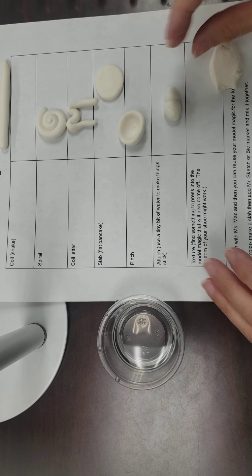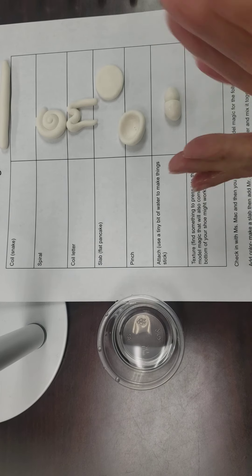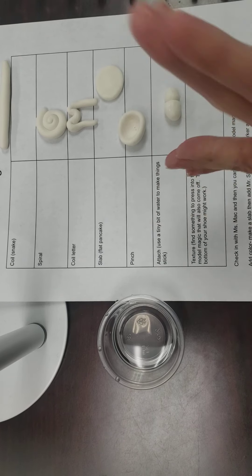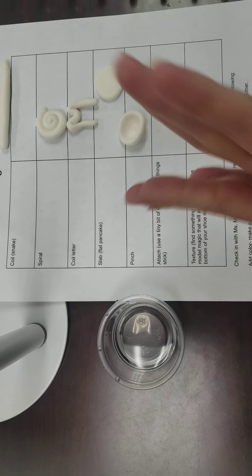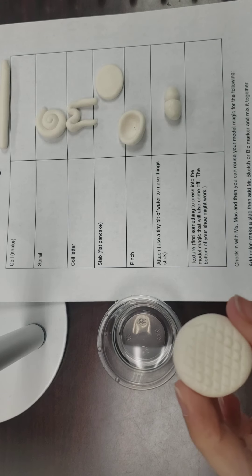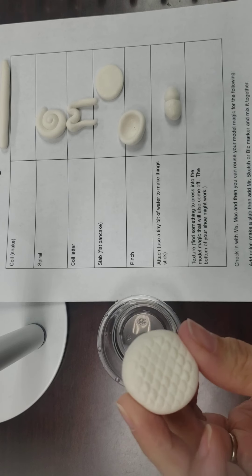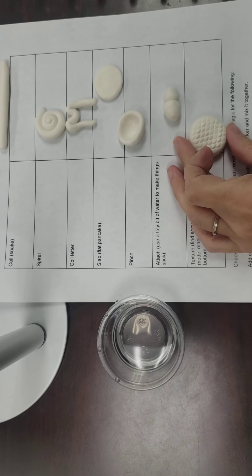And then a texture - you're going to look around the room for something that you might be able to press into the clay that you could actually create a texture with. So I'm going to find something, push it on there, and you can see my texture right there that was imprinted into the clay.